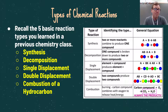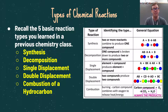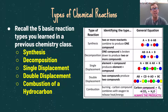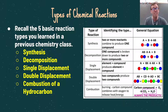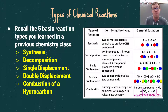In previous chemistry classes we identified chemical reactions into five basic categories: synthesis, decomposition, single displacement, double displacement, and the combustion of a hydrocarbon. A synthesis reaction is where two or more reactants combine to produce one compound. Decomposition is when a compound is broken down into two or more compounds or individual elements. Single displacement is element plus compound — an element replaces an element in the other compound. Double displacement is where two compounds produce two compounds. And combustion is the burning of a carbon-hydrogen compound with oxygen to produce carbon dioxide and water.